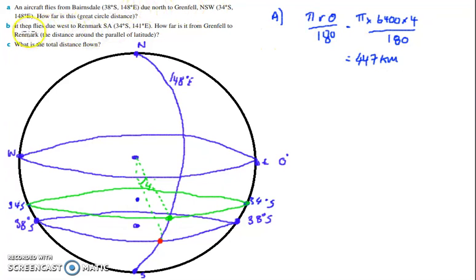Part B: It then flies due west from this location to 141 degrees east. How far is it from Grenfell to Renmar? So the distance along the parallel lines. We're at this location and it's telling us that we're going to fly around to 141 degrees east. So let's just draw in 141 degrees east. That's at the prime meridian line. That means we're going back towards 0, so it would be on this side. That is our new location right there on this green line, that line of latitude.